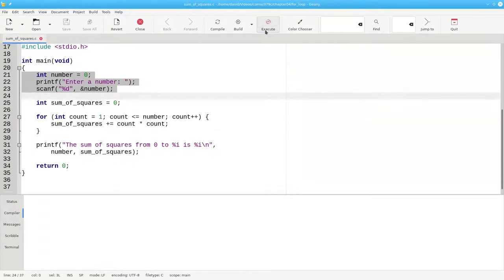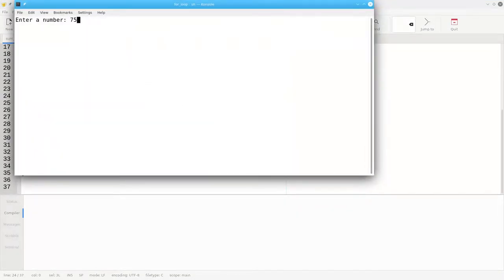We can run it again, and give another number like 75, and get that sum of squares.